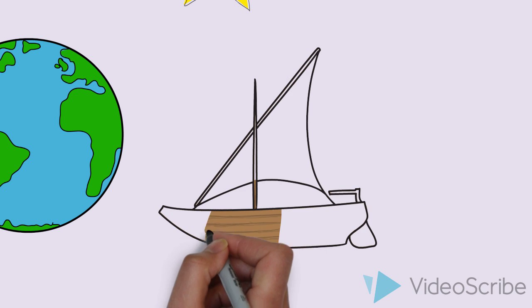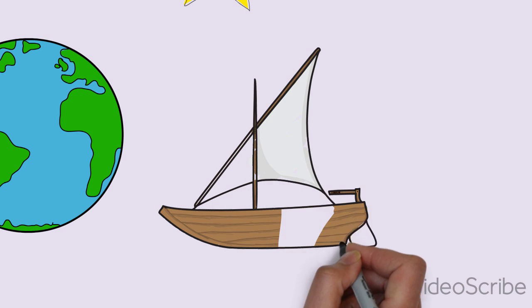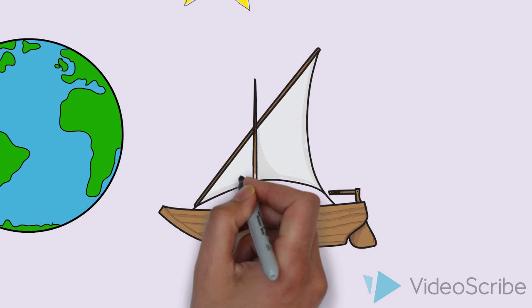And then the last thing would be triangular sails. This allows them to sail against the wind if they need to or against the currents.